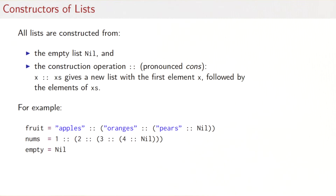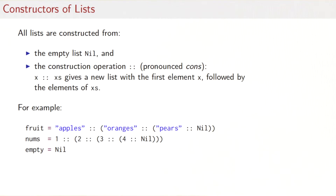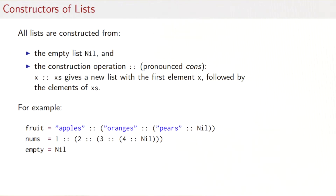We've seen lists constructed homogeneously using the list syntax, but that's syntactic sugar for something more fundamental. All lists in Scala are constructed from the empty list nil and the cons operation, written as double colon (::) and pronounced 'cons'. The operation x :: xs gives a new list with first element x followed by the elements of xs. So our previous 'fruit' list can be written as apples :: oranges :: pears :: Nil, and the empty list is simply Nil.